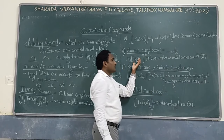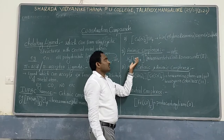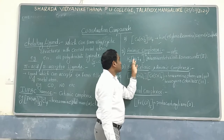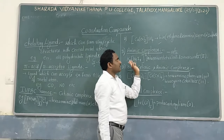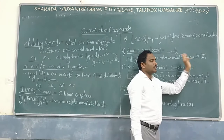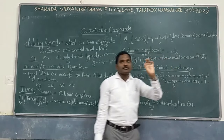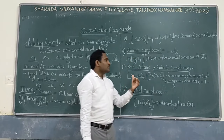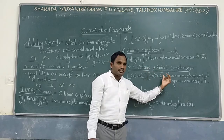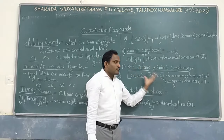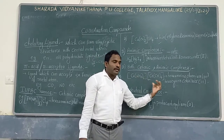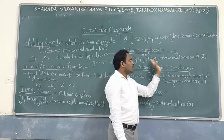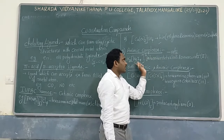In case of Latin names, we need to use Latin names only. But in case of mercury, we need to write 'mercurate' only. But in case of silver and gold, you need to mention 'argentate' — don't write 'silverate'. And in case of gold, write 'aurate'. But in case of mercury, don't put '-ate' as 'mercurate' — write mercury(II).